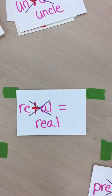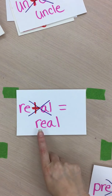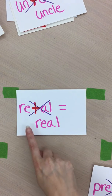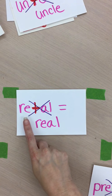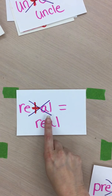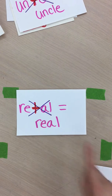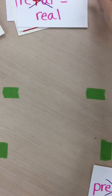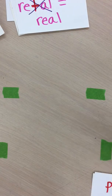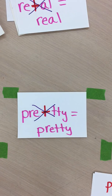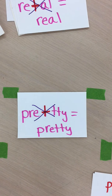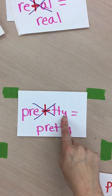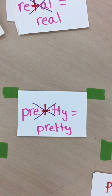Next we have the letters re, which means again, but if we look at the rest of the word we have al, and that is not a word, so this is not a prefix. Here we have the word pretty — pre is a prefix, but when we look at the rest of the word we have tty, and tty is not a word, so pre in this case is not a prefix.